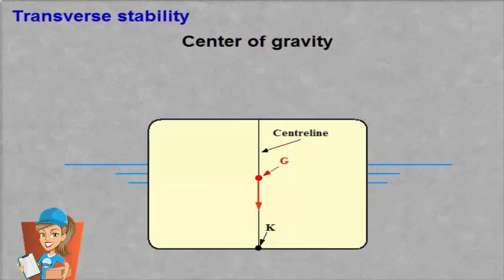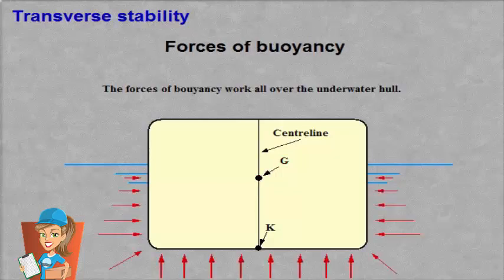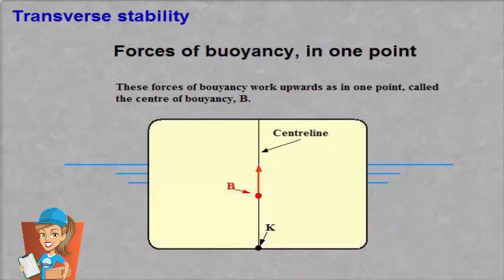The gravitational forces work downwards as if they work in one point. The forces of buoyancy work all over the underwater hull. These forces of buoyancy work upwards as in one point called the centre of buoyancy, B.